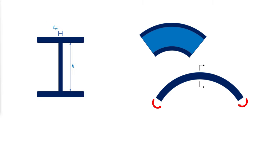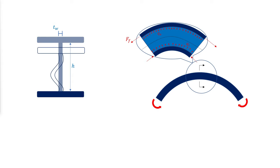For closing moments that induce compression at the inner flange, the radial components of the flange forces cause compression in the web. For members with small radius bends and thin webs, these loads can cause web bend buckling. The nominal in-plane flexural strength for the web bend buckling limit state is evaluated accordingly, then reduced by the reduction factor phi and compared to the required closing bending moment.